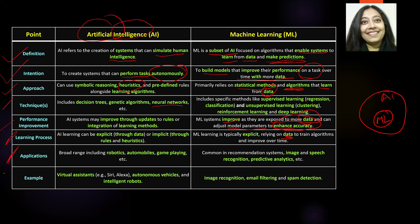Some applications for AI could be robotics, automobiles, and game playing like chess. For ML, applications include image recognition, speech recognition, and any kind of predictive analysis — since data is used to make predictions, predictive analysis is one of the key applications for ML. For examples: in AI you have virtual assistants, autonomous vehicles, and intelligent robots; in ML you have image recognition, email filtering, and spam detection.